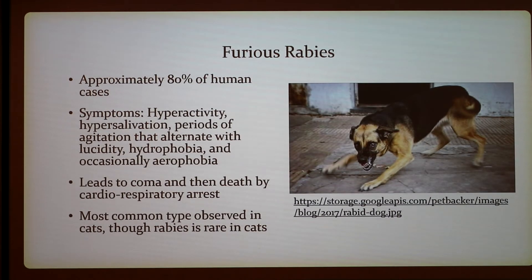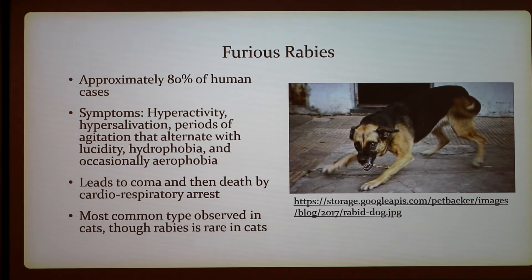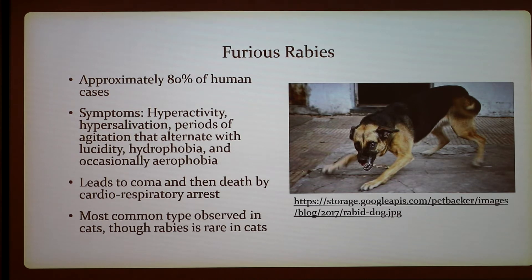There are two types of rabies. The most common is furious rabies, approximately 80% of human cases. Main symptoms include hyperactivity, hypersalivation, periods of agitation alternating with lucidity, hydrophobia, and occasionally aerophobia. It leads to coma and then death by cardiorespiratory arrest. This is the most common type observed in cats, though rabies itself is rare in cats.